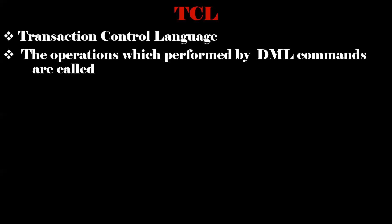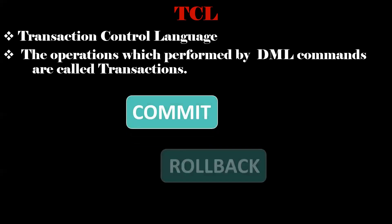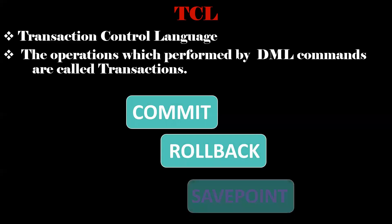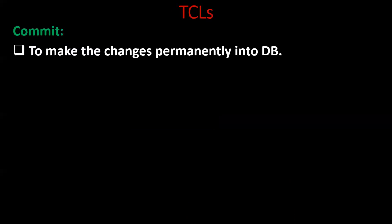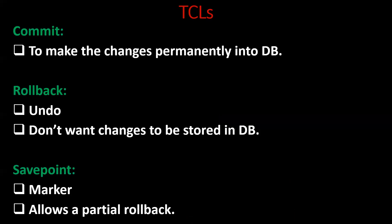Next is TCL, transaction control language. The operations performed using DML commands are called transactions. These transactions need to be either permanently stored or revoked from the database. By using commit, we can store the data permanently. By using rollback, we can discard the changes. Next is savepoint — most of us know commit and rollback but not savepoint, so you should have a better understanding of savepoint as well. Savepoint acts like a marker and allows a partial rollback.